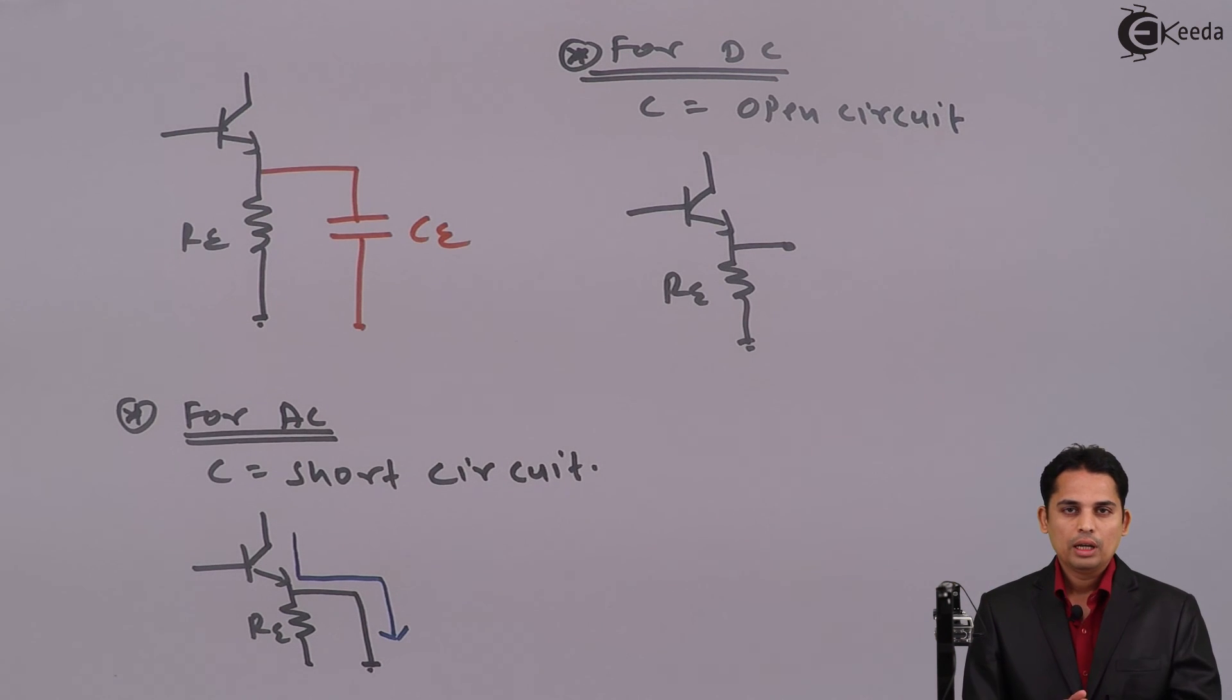Because current follows minimum resistance path. If current is flowing from emitter, then it will be flowing from this loop. And hence, RE is as good as not present in the circuit. And hence, amplification will increase. This is how we can bypass RE from the circuit by using bypass capacitor at the emitter. This is the basic of bypassing RE from the circuit. We will bypass RE in order to get high amplification during AC analysis.